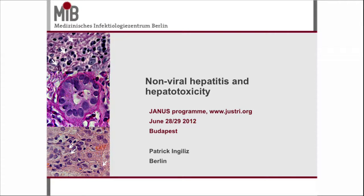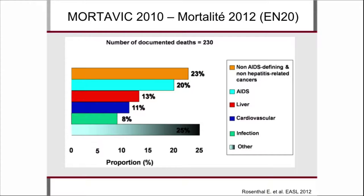I'm happy to talk to you today and I'm more than happy to show you this slide. This is the French mortality registry in HIV patients, and what you see here — the red bar — is liver disease. I'm showing you this to tell you liver disease plays an important role in morbidity and mortality in HIV patients.